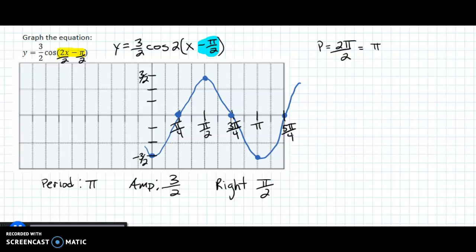The domain, let's go ahead and talk about that quickly. The domain is all real numbers, and the range is the low to high, so it is negative 3/2 to positive 3/2.